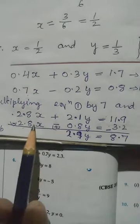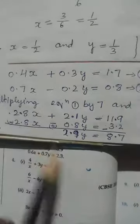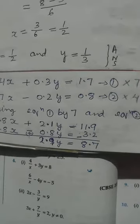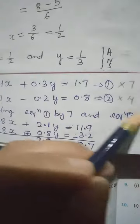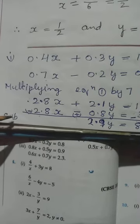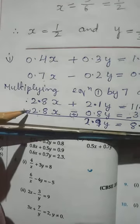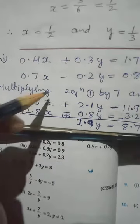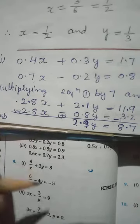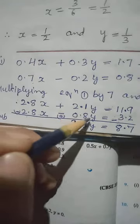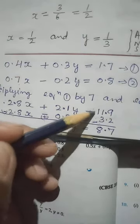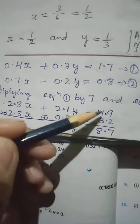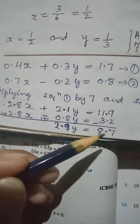X will remain. The minus remains the same. 4 into 0.2 gives 0.8 — one number after decimal. 4 into 0.8 gives 3.2. Now, we have both signs as plus, so let's subtract in order to change the sign. We multiply with minus, so minus to minus becomes plus, and minus to plus becomes minus. So 2.8 minus 2.8 becomes 0 — we eliminate X. Both are plus so we add: 2.1 plus 0.8 gives 2.9Y. Then 11.9 minus 3.2 gives 8.7. We want Y, so 8.7 divided by 2.9 will give us the value of Y.